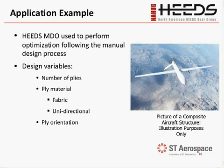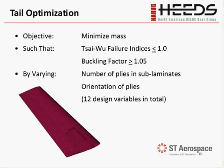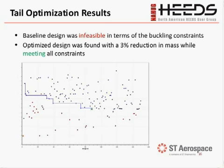HEEDS MDO was then used to iterate further on the best manual design, with design variables including number of plies — requiring the automated program — ply material (fabric or unidirectional), and ply orientation. The first of three components optimized was a tail, minimizing mass with constraints on Tsai-Wu failure index and buckling factors, using 12 design variables total. The manual design from ST Aerospace was infeasible in terms of buckling constraints; the optimized design not only satisfied those constraints but achieved a 3% reduction in mass.